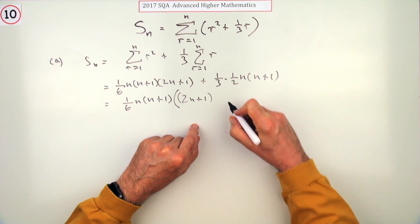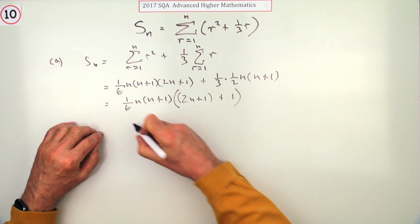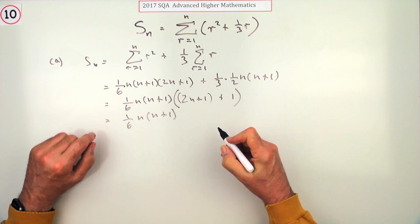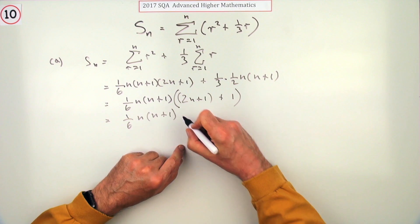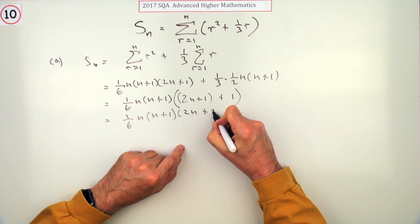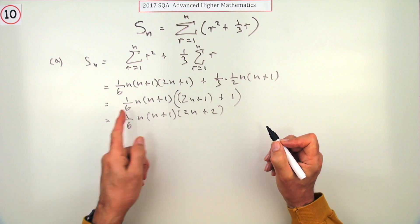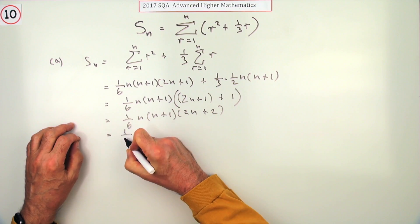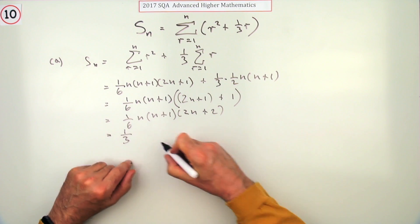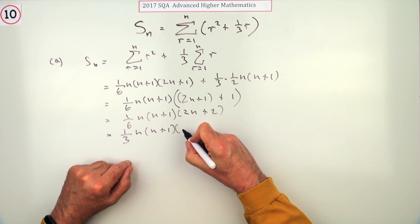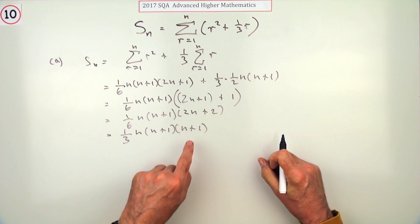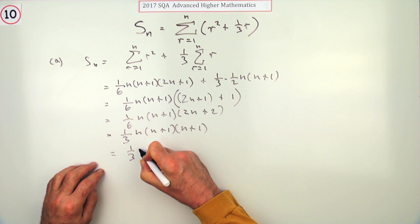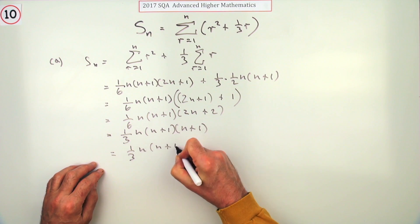This one's left with two n plus one. In this one, it was the whole thing, so there's just one part. I've got a sixth of n times n plus one—now that's two n plus two. Obviously there's a common factor of two that can come out, so you can take that common factor of two out and raise that up to a third. What you're left with is an n plus one which matches that, so finally it's a third of n times n plus one squared.